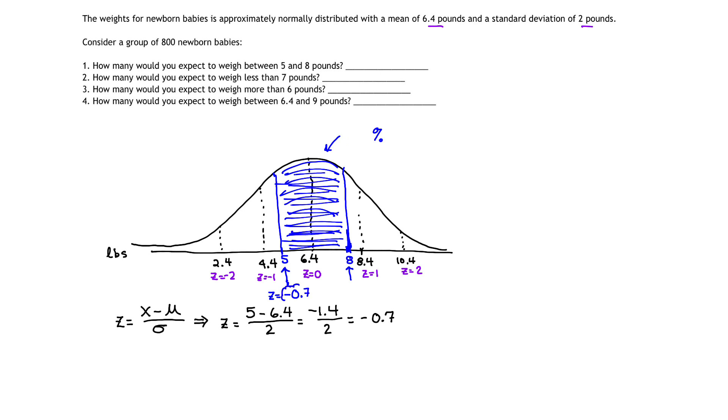And that makes sense with my chart, right? It falls in between negative 1 and 0. So good, I got my first z-score.